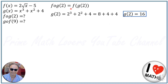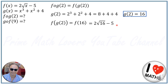Now we calculate f∘g(2) = f(16). In the f(x) function, we replace x with 16, giving us 2√(16−5). We know that √16 = 4, so this becomes 2 times 4 minus 5, or 8 minus 5, which equals 3.